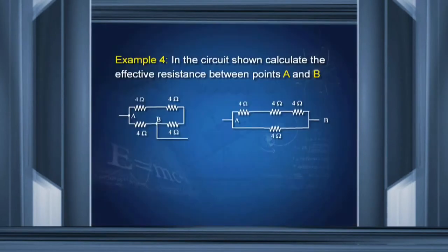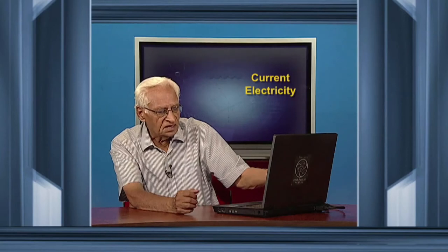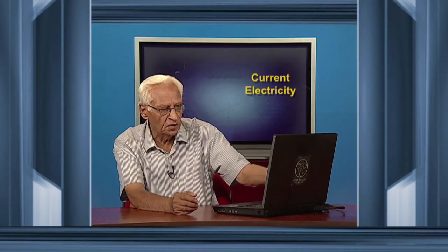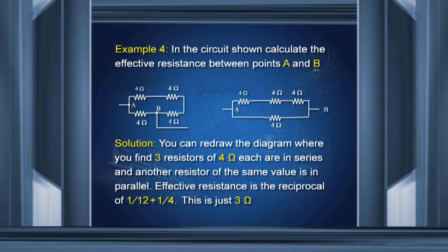Sometimes you will get a confusing circuit like this. The examiner will ask what is the effective resistance between points A and B. If you just think a bit, you can redraw this circuit. This resistance, this resistance and this resistance are in series, and these three are in parallel with this. So they are 4 plus 4 plus 4 equal to 12. So 1/12 plus 1/4, and the reciprocal of that is just 3 ohms. So the effective resistance between points A and B is just 3 ohms.